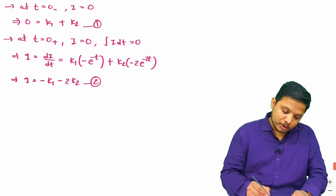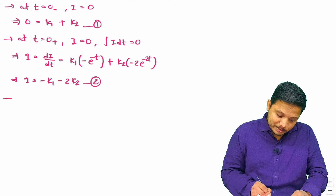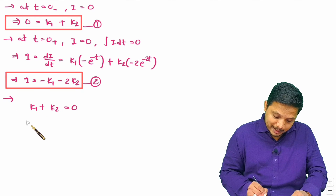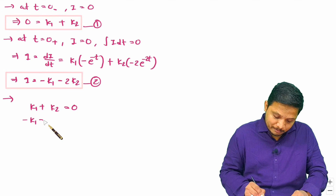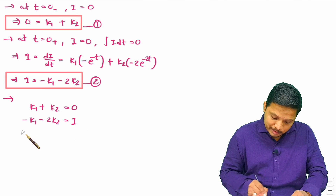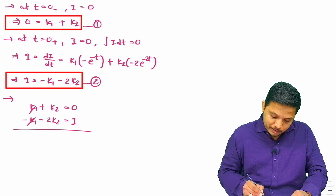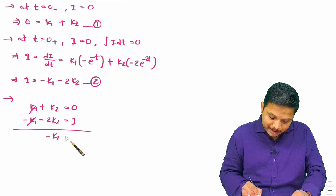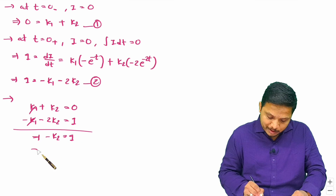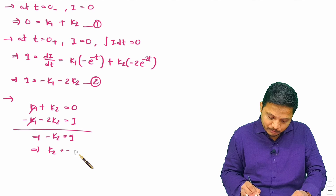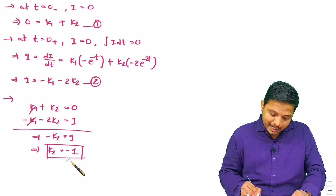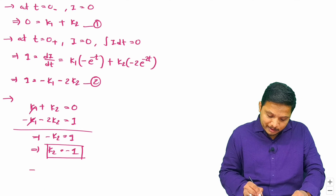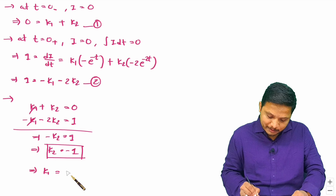We now have two equations: k1 + k2 = 0 and −k1 − 2k2 = 1. Adding them together: −k2 = 1, so k2 = −1. Since k1 + k2 = 0, we get k1 = +1.